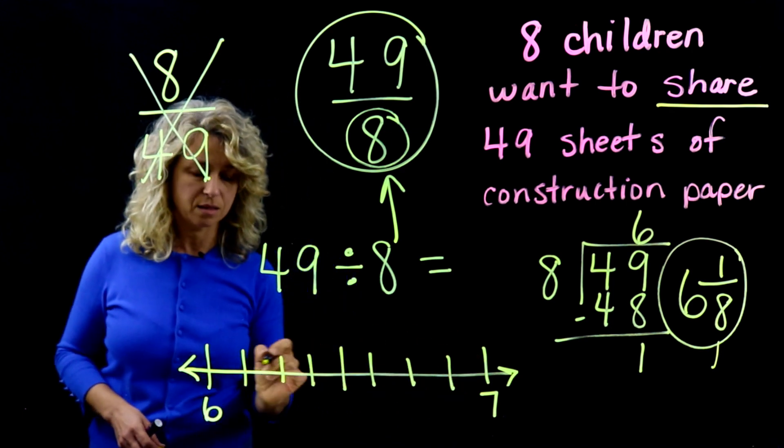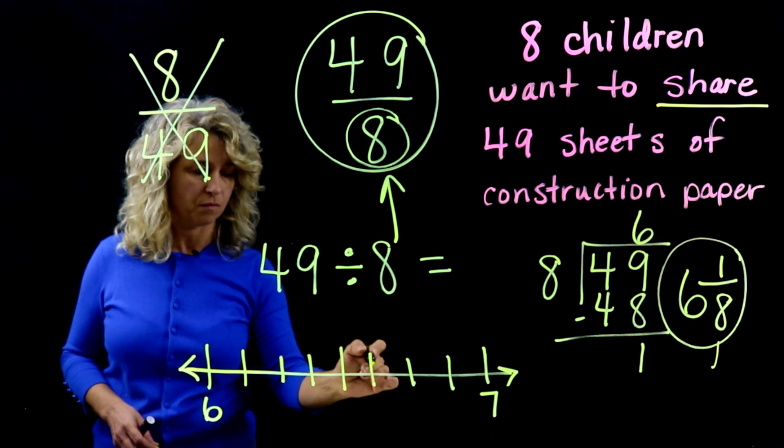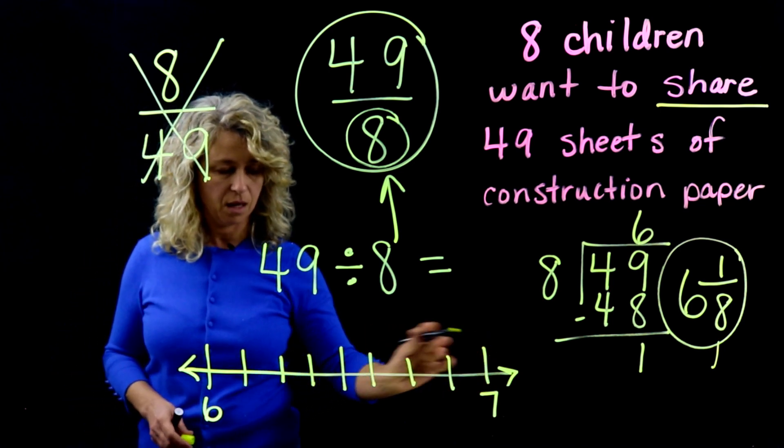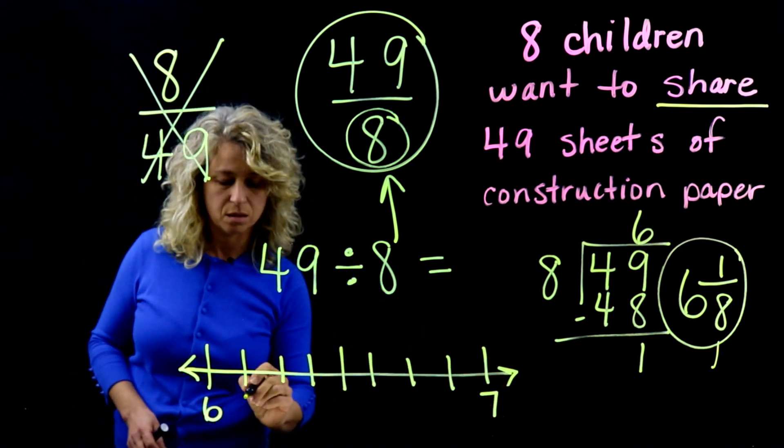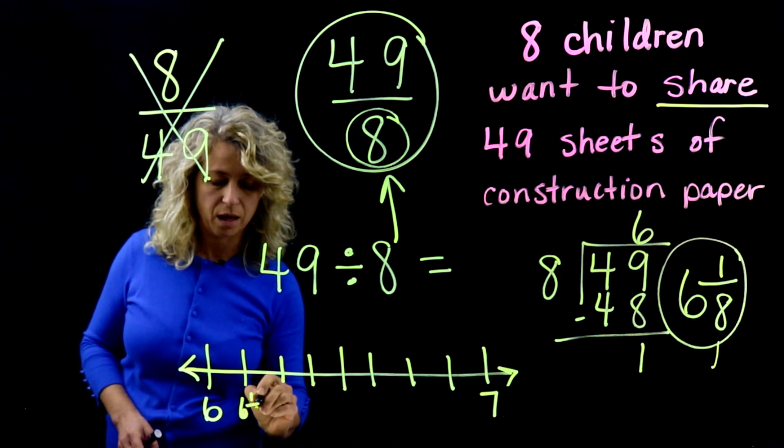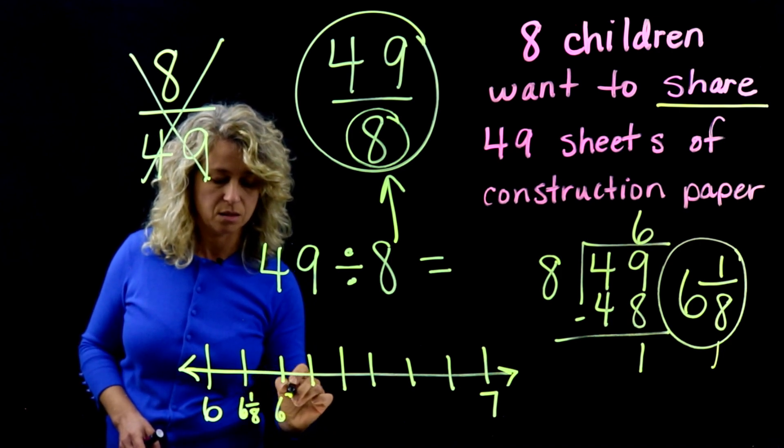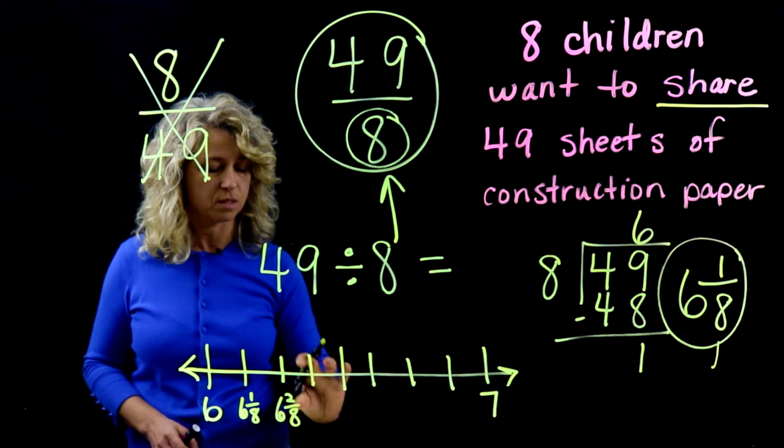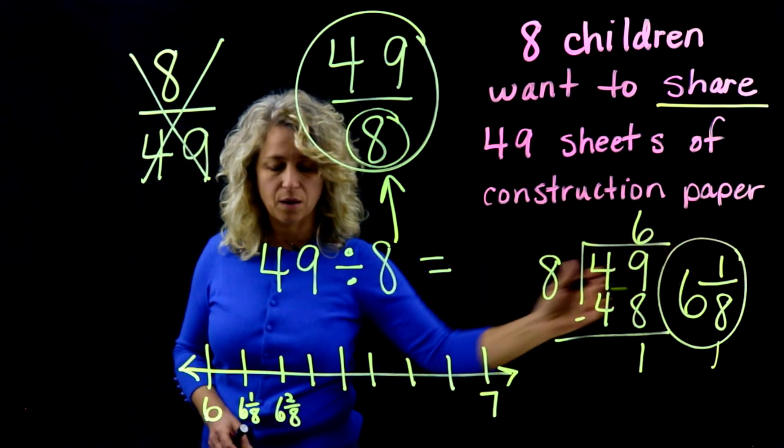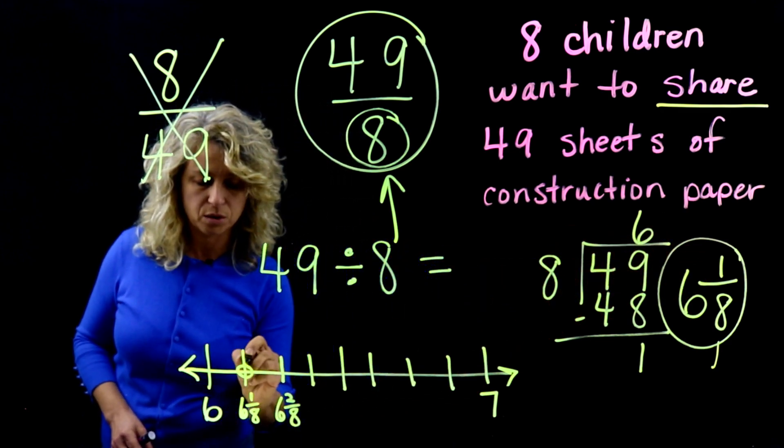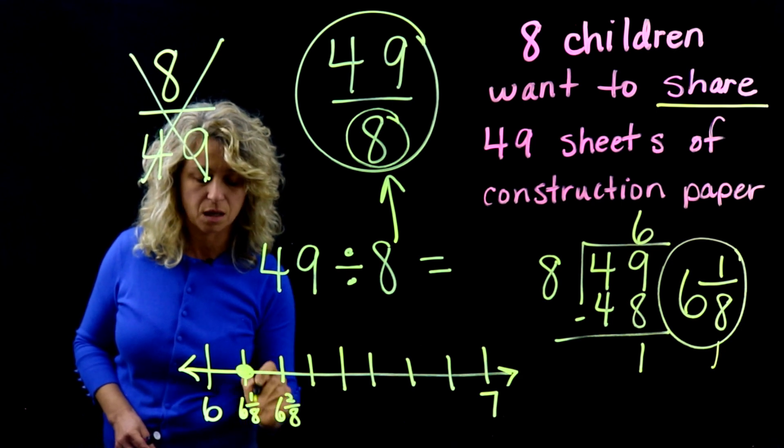And let's double-check that this is 8: 1, 2, 3, 4, 5, 6, 7, 8. And you could label all the way across—this would be 6 and 1/8, this is 6 and 2/8, and so forth, 6 and 3/8, and so forth. But here is where your number is going to fall: 6 and 1/8.